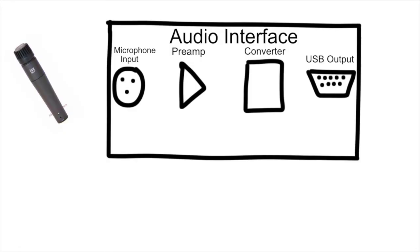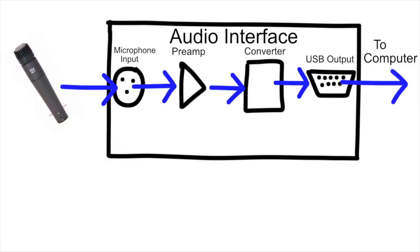However, on some preamps, when you plug in your microphone or guitar, it'll automatically take that signal and route it to the converter and send it into the computer. In that kind of signal chain, you're not able to insert that hardware compressor after the preamp because you don't have access to the signal. To solve this issue, some interfaces have what's called an insert, or a send and return.